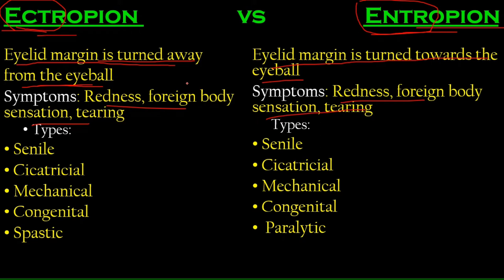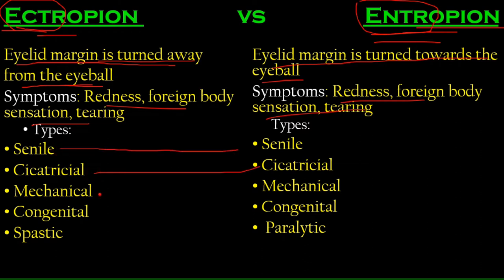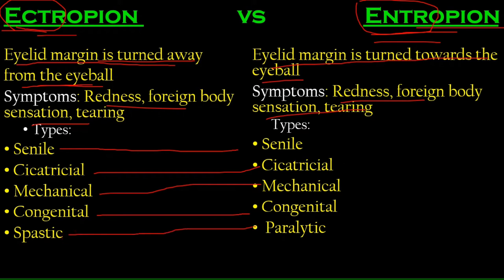There are five types of ectropion and five types of entropion, which are conveniently quite similar. Both have: senile, cicatricial, mechanical, and congenital types. The one that differs is that ectropion has a paralytic type, while entropion has a spastic type.